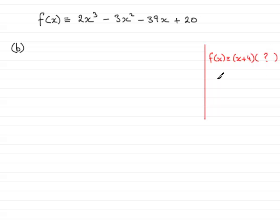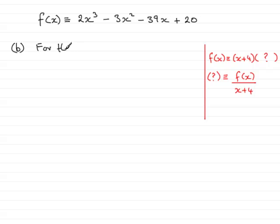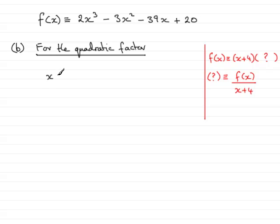In order to find that, the way that I do this is to divide both sides by x plus 4. So that quadratic factor, if I just label it with a question mark inside brackets, is going to be identical to doing f of x divided by x plus 4. And that really just guides me into what I'm going to do. So I'm going to give this a subtitle: for the quadratic factor. Hopefully that will tell the examiner or reader what I'm doing. And for the quadratic factor, I'm going to need to divide x plus 4 into the cubic expression: 2x cubed minus 3x squared minus 39x plus 20.